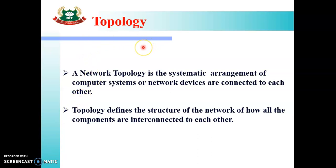What is meant by topology? The way we arrange our computer systems in a network — the systematic arrangement — is called Network Topology. We can say: a network topology is the systematic arrangement of computer systems and network devices connected to each other. Topology basically defines our network structure and decides how all the components are interconnected to each other.